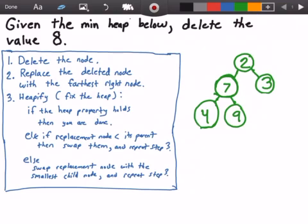All right, now we're going to check if the heap property is true. Is 4 less than its parent? It is, and because it is we need to swap these two nodes.